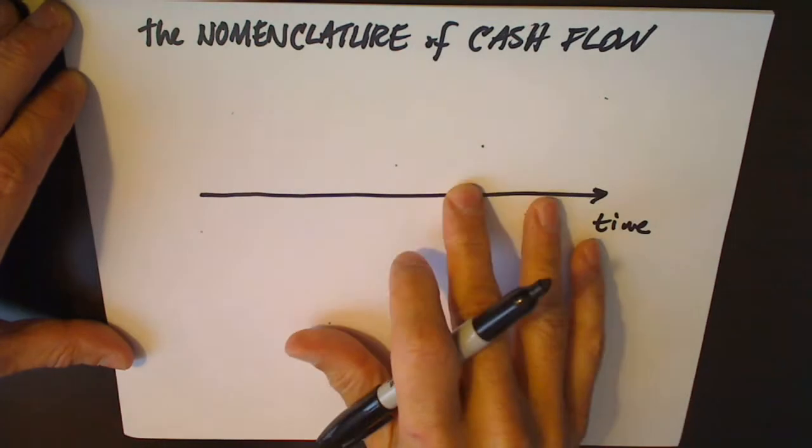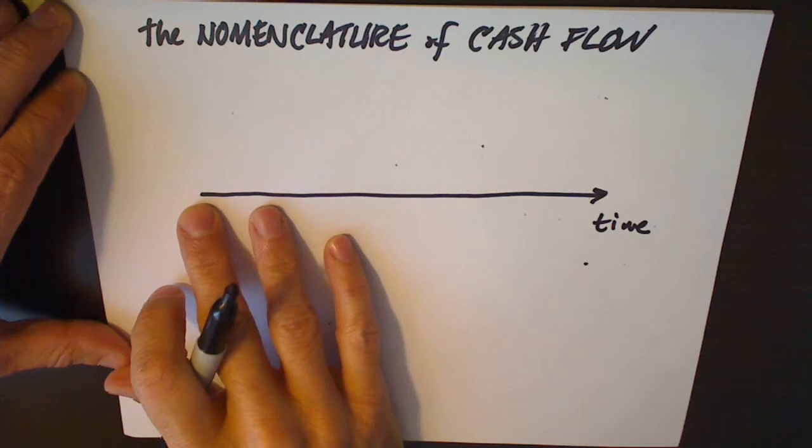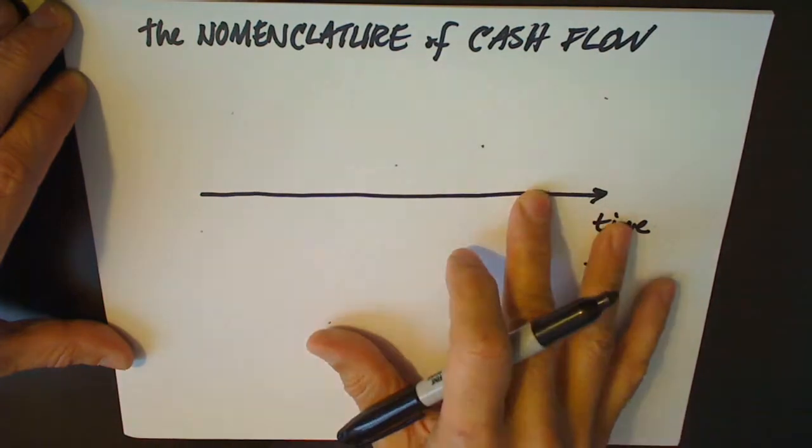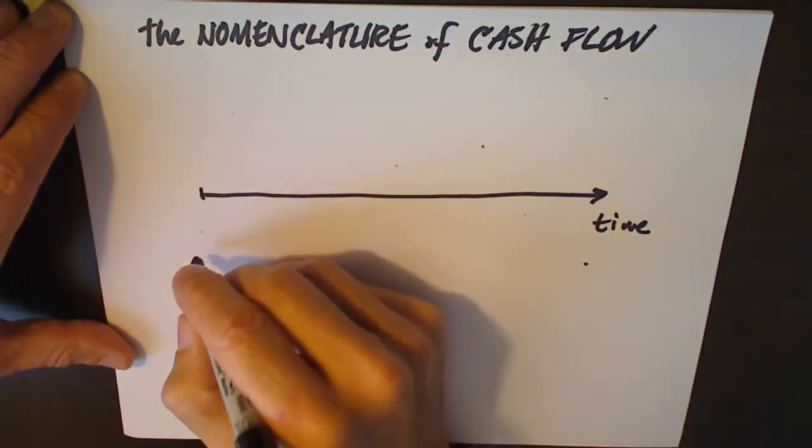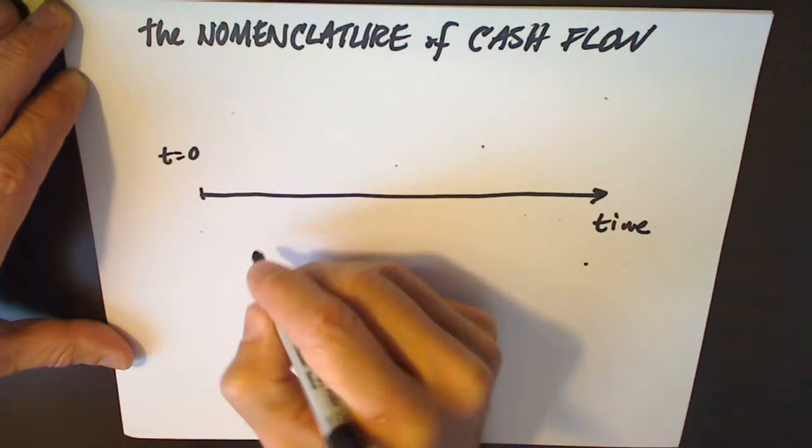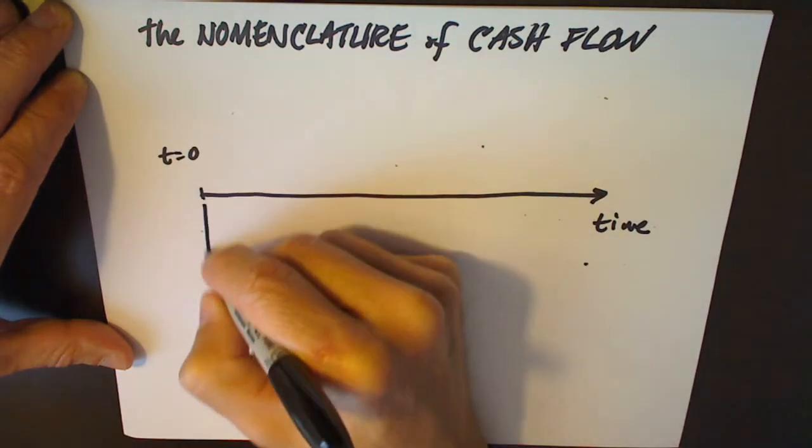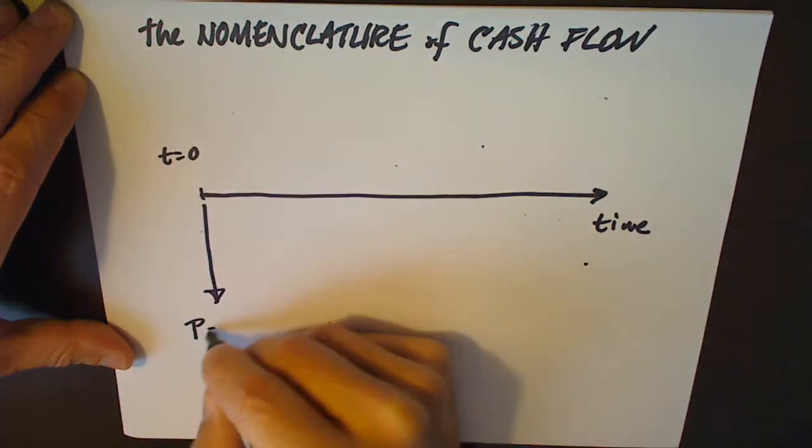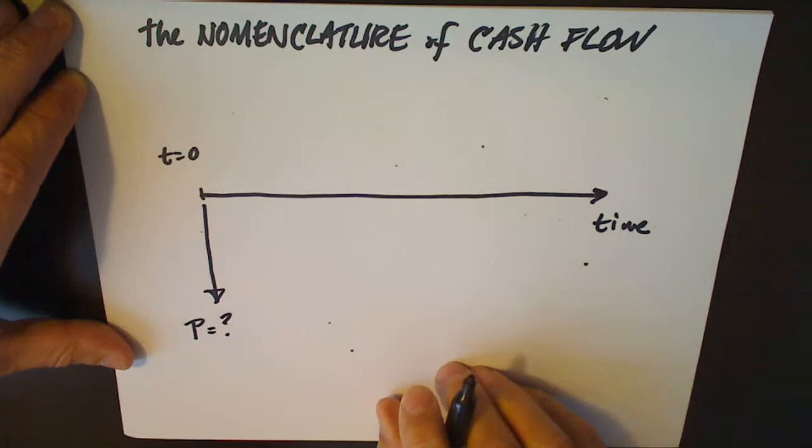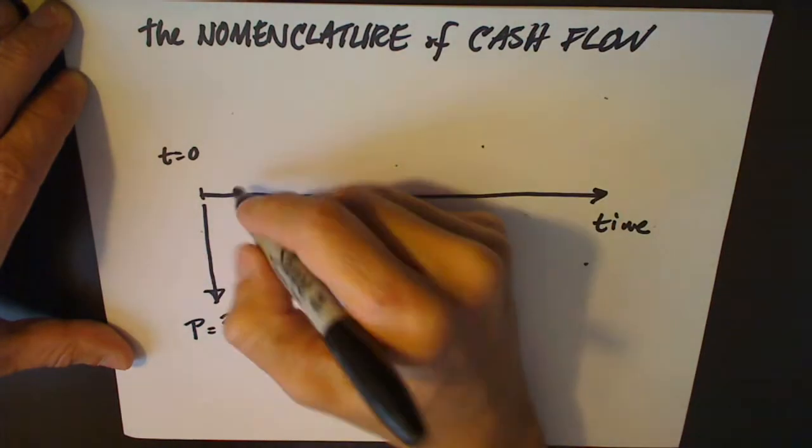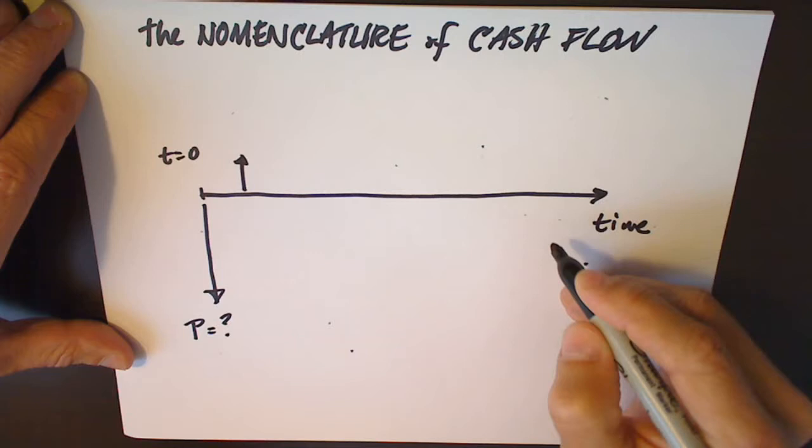So here's time equals zero, and what we want to know is how much shall we pay for this company. The company has revenues, let's say, and they're expecting those revenues to grow.